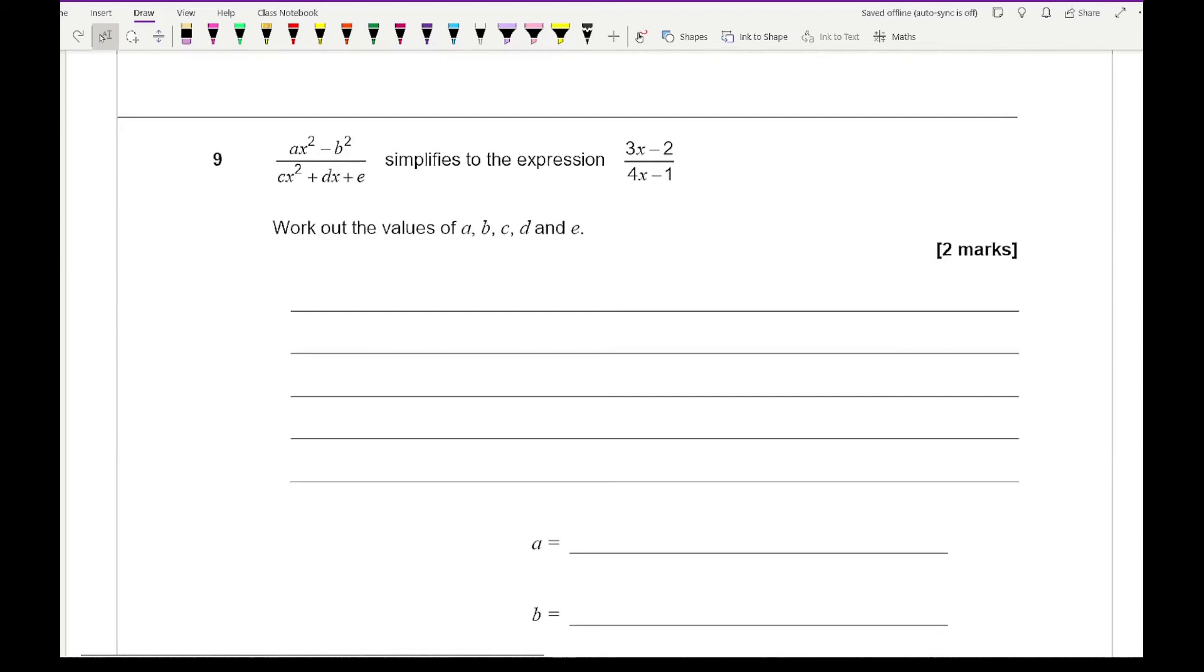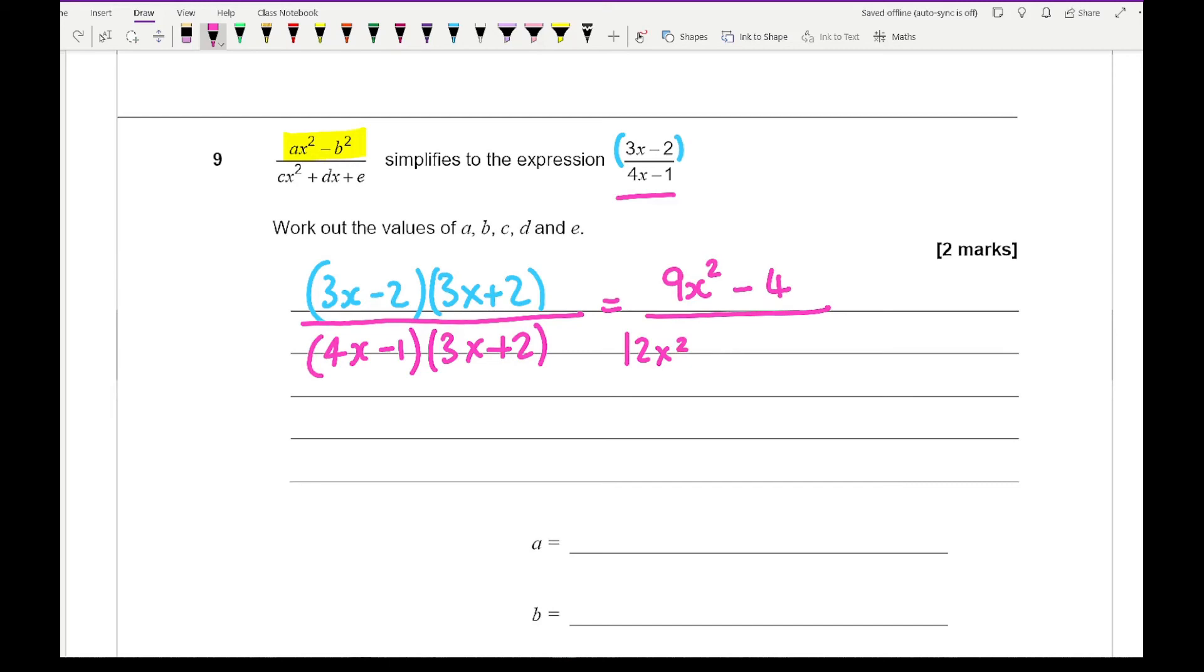For question 9 we've got an algebraic expression that simplifies to 3X minus 2 over 4X minus 1. Work out the values of A, B, C, D and E. This one is about comparing coefficients, but recognising that the top is a difference of two squares. If it simplifies to be 3X minus 2, then that top needs to be 3X minus 2, 3X plus 2. The 3X plus 2 doesn't appear in our final algebraic fraction, which means the 3X plus 2 must be the bit that cancels. So what I then got is 4X minus 1 and 3X plus 2. If I expand the top, I end up with 9X squared minus 4. If I expand the bottom, I end up with 12X squared and it's going to be plus 5X minus 2.